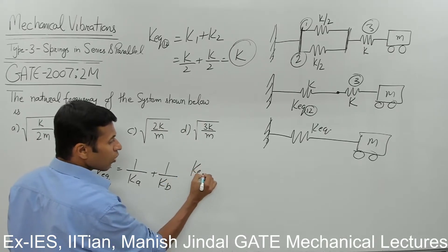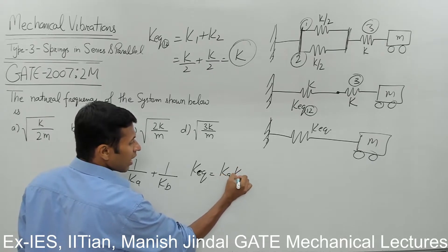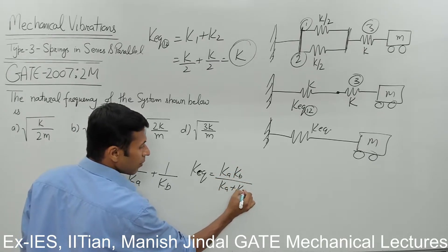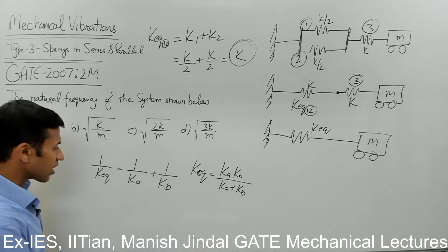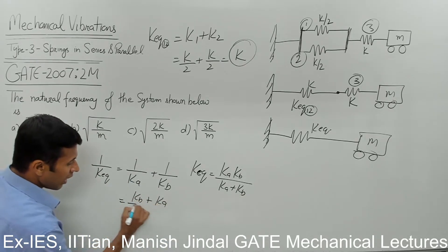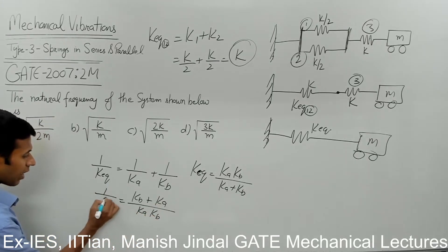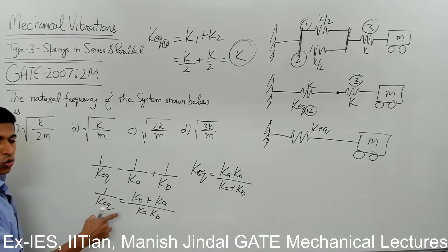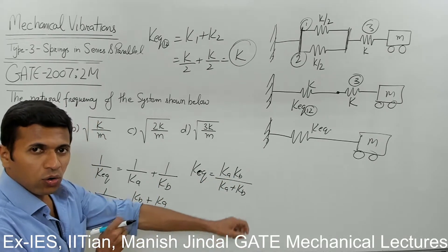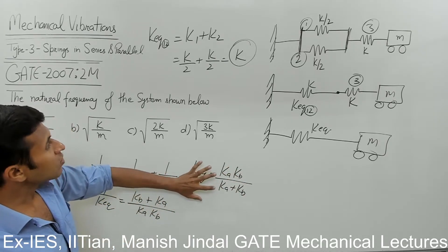I am using k-a and k-b to avoid confusion. So the formula for k-equivalent is: k-a times k-b divided by k-a plus k-b. If we solve 1 by k-equivalent, it gives k-b plus k-a divided by k-a times k-b, so k-equivalent equals k-a times k-b divided by k-a plus k-b.